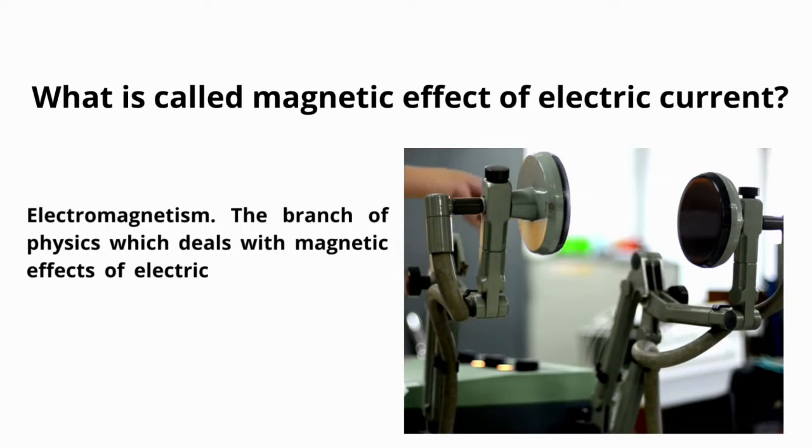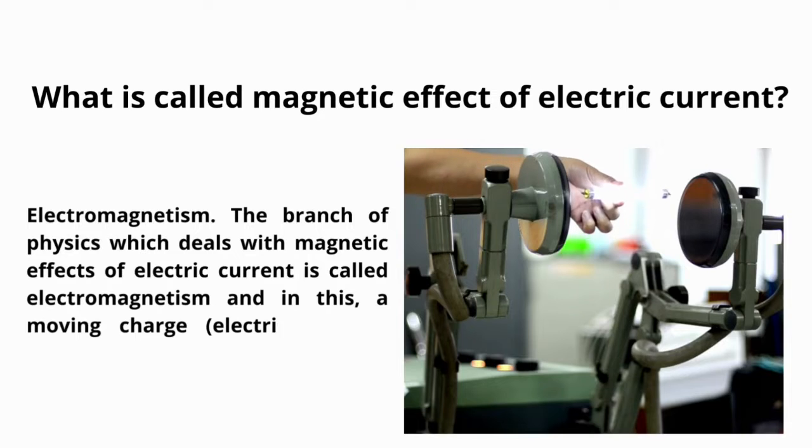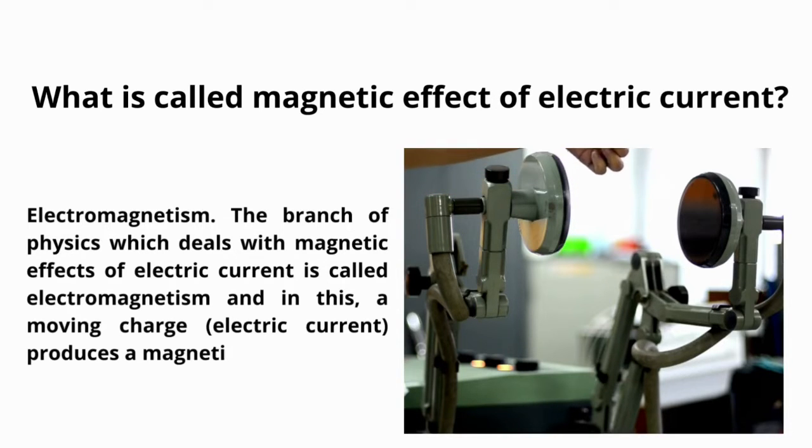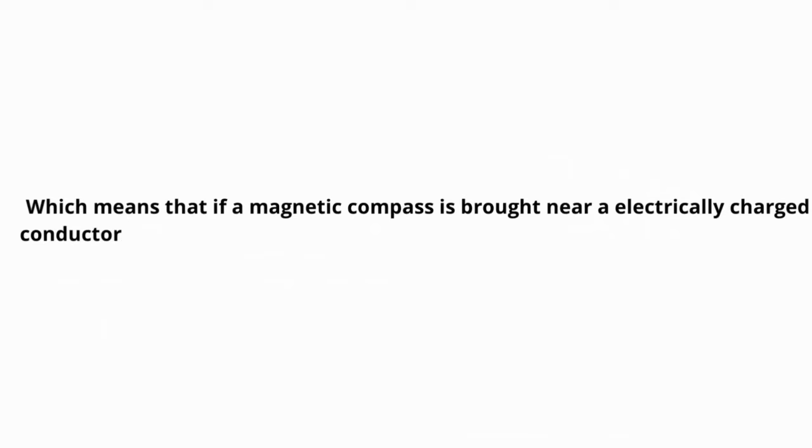What is called magnetic effect of electric current? It is electromagnetism. The branch of physics which deals with magnetic effect of electric current is called electromagnetism. And in this, a moving charge produces a magnetic field.